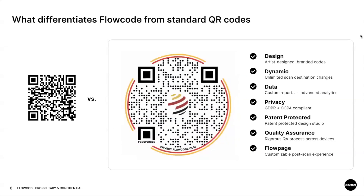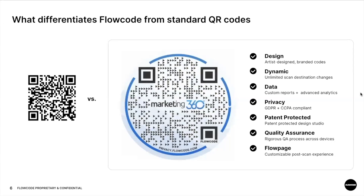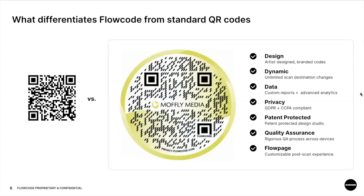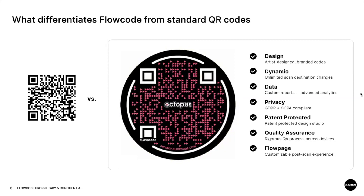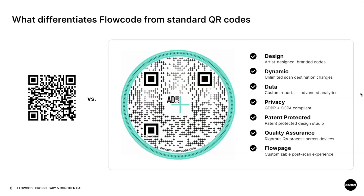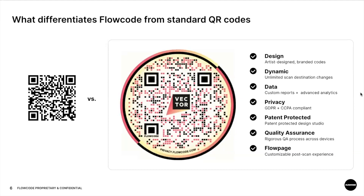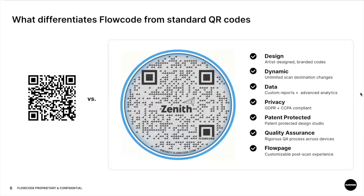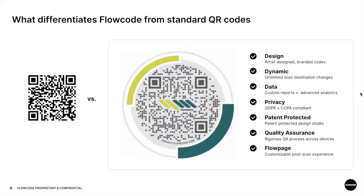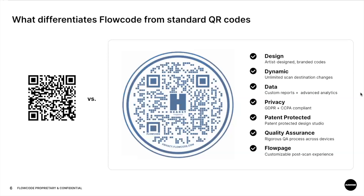All of our FlowCodes are dynamic, which means you can change the scan destination at any time. So if you print a FlowCode on marketing materials for a campaign and that campaign comes to an end, you can redirect your FlowCode to a new scan destination of your choice — there's really no need to reprint all of your materials.